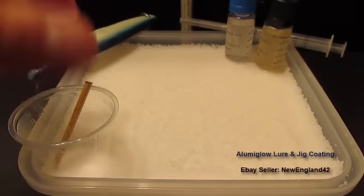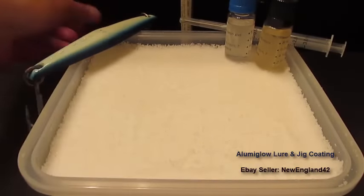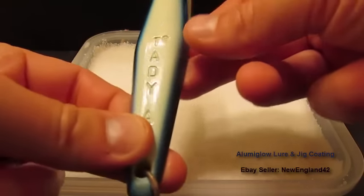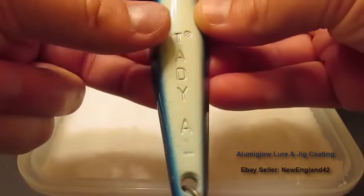In this video, I'll show how to paint the flat side of a Taddy A1 jig, as well as how to mix the pigment and use the syringes that come with the kit.